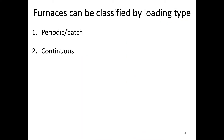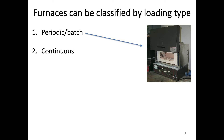Another way to classify these furnaces is by the loading type — how we actually load samples into them. The first type is periodic or batch, which is more common on a lab scale. Here I've shown a picture of a box furnace. We'd have a few ceramic parts we want to sinter, put them in the furnace, close it up, start the program, and when it's finished take them out and start over again as individual batches. This is useful on the lab side where we're probably making small quantities, but on the industrial scale this is not usually the best way to make large quantities.